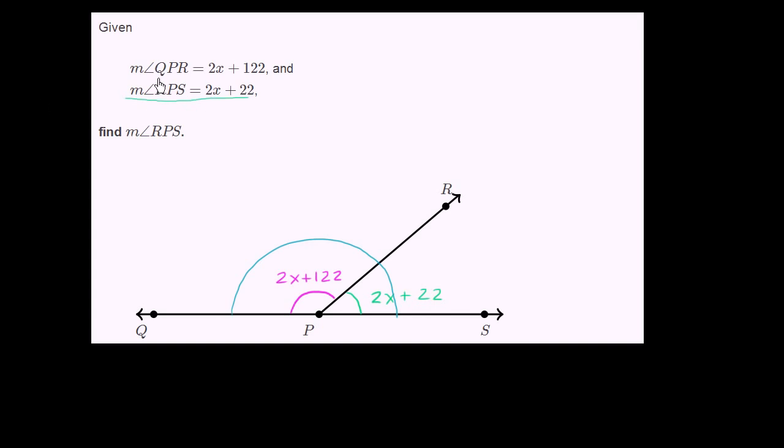So we can say that the measure of angle QPR, this angle right over here is 2x plus 122, plus the green angle, plus angle RPS, so plus 2x plus 22 is going to be equal to 180 degrees. It's going to be equal to 180.